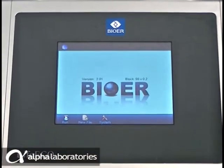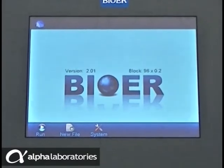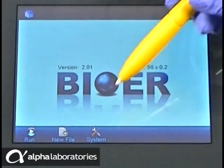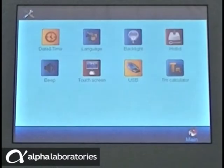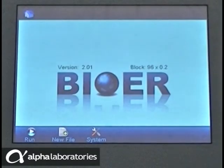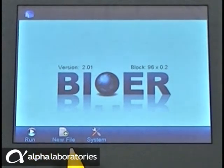Programming and operation can also be controlled directly from the full color touch screen interface using the stylus or manually. The home screen features three simple options: Run to select and start an existing PCR protocol, New File to create a new method, and System to modify the instrument's settings.